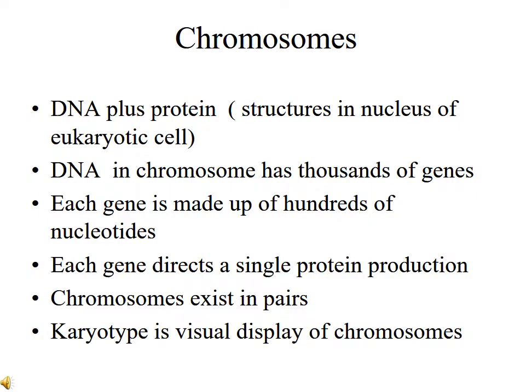Now let's look at chromosomes. Chromosomes are structures in the nucleus of eukaryotic cells. They are small bodies that you see when a cell divides, made up of DNA plus protein. The DNA in chromosomes will have thousands of genes. A given chromosome in humans may have 4,000 to 5,000 genes. Each gene is made up of hundreds of nucleotides, and each gene will direct a single protein production — like the example where the insulin gene directed the production of the insulin molecule.